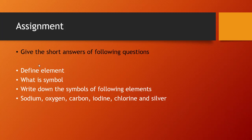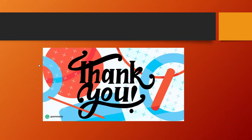The next one: give the short answers of all the questions. Question number one: define element. The next one: what is a symbol? The abbreviated name of any element is called a symbol. Write down the symbols of the following elements: sodium, oxygen, carbon, iodine, chlorine, and silver. I hope today's lesson will help you to understand elements and their symbols. Thank you so much.